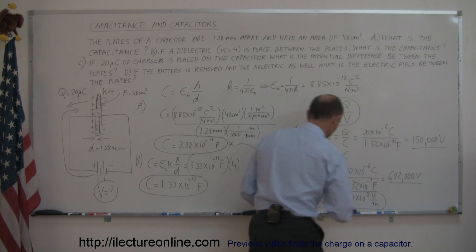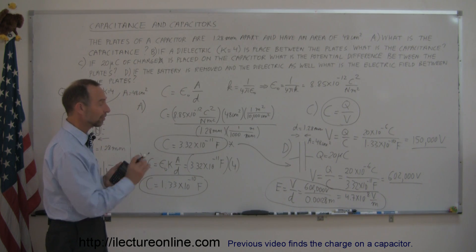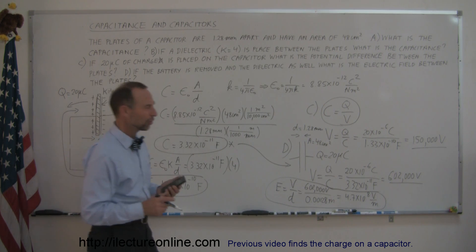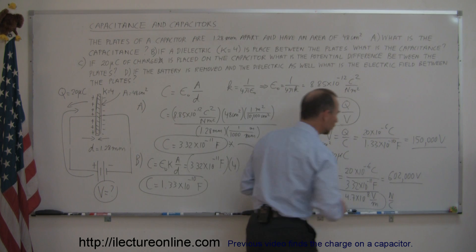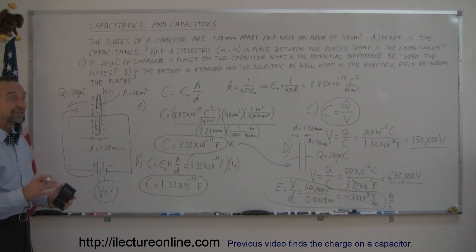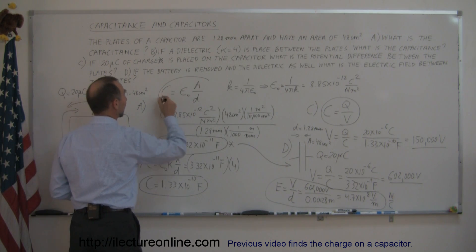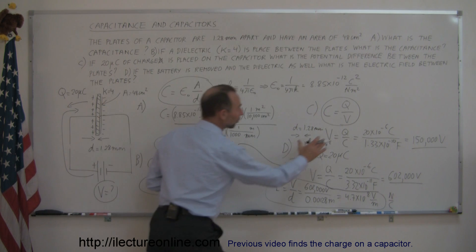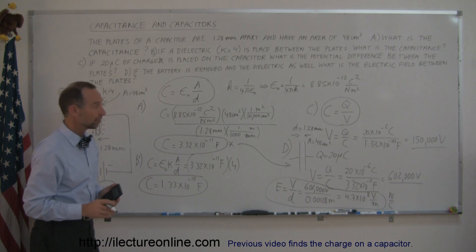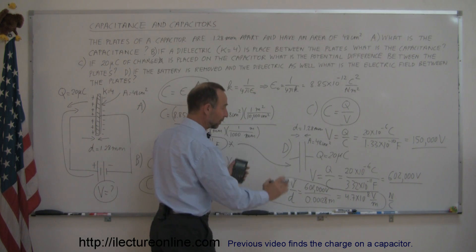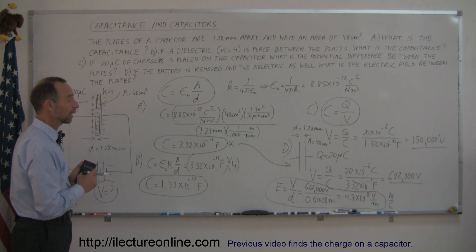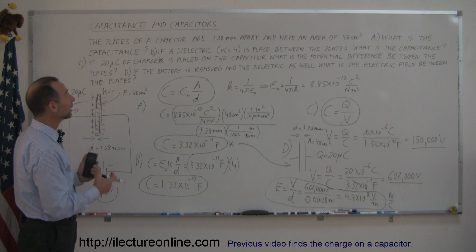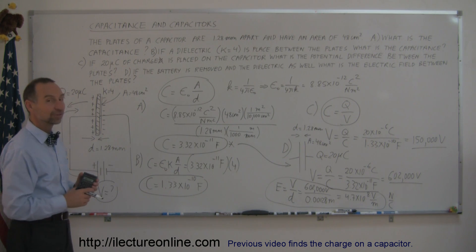The electric field between the plates is 4.7 times 10 to the eighth volts per meter — equivalently newtons per coulomb. This problem nicely demonstrates how to use the capacitance equation from physical dimensions, how adding a dielectric changes capacitance, how to find charge and voltage from the definition of capacitance, and how electric field relates to potential difference and plate separation. That's how you do this capacitor problem — I hope this helps!